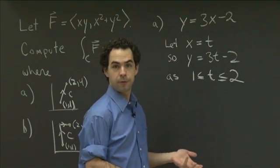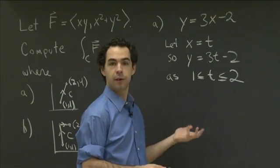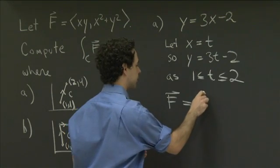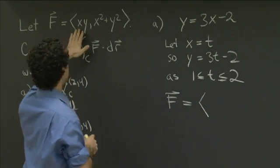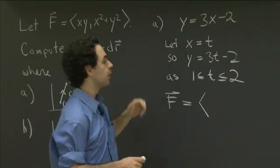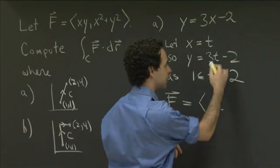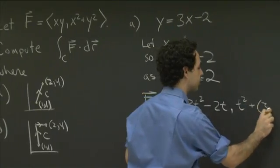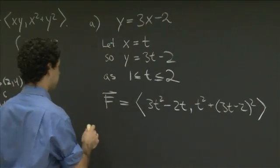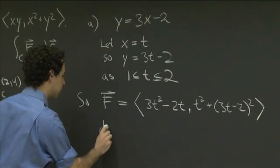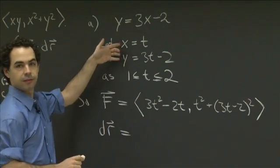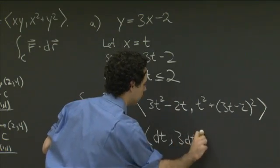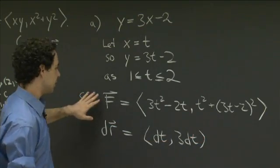Now we need to find what F and dr are in this parametrization. F is xy comma x squared plus y squared. Plugging in, xy becomes t times (3t minus 2), which is 3t squared minus 2t. And x squared plus y squared is t squared plus (3t minus 2) squared. For dr, we take the differentials of x and y, giving dt comma 3dt, or (1, 3) times dt.